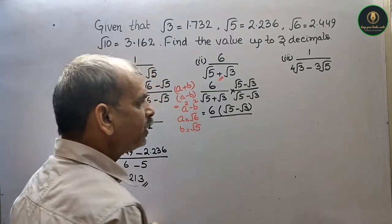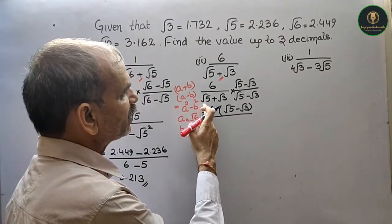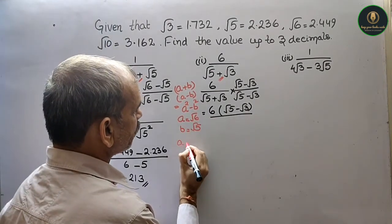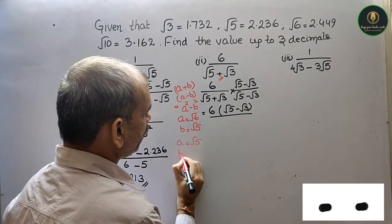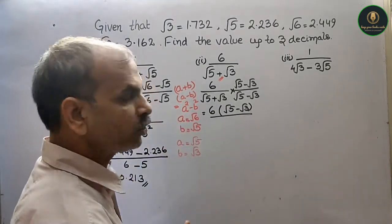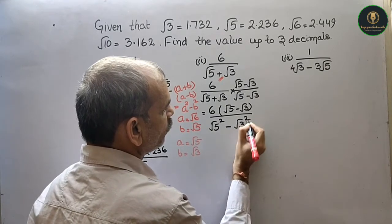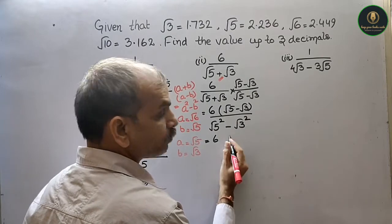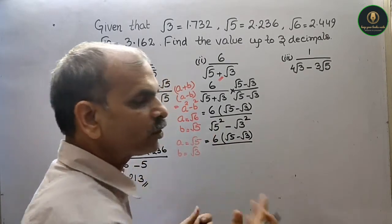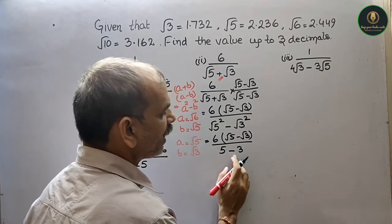नीचे वाला same form में आ गया, a square minus b square वाले में. तो यहाँ पर a is root 5 and b is root 3. तो a square minus b square में डालेंगे: root 5 square minus root 3 square. Now 6 के साथ multiply करो और root 5 minus root 3. Root 5 square कितना होता है? 5. 5 minus root 3 square is 3 — तो 5 minus 3 is 2.